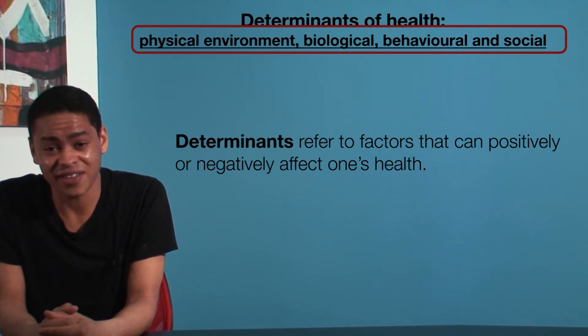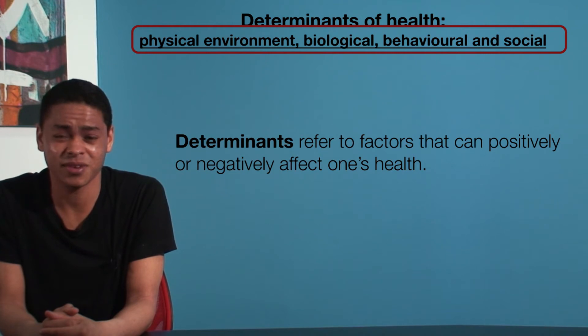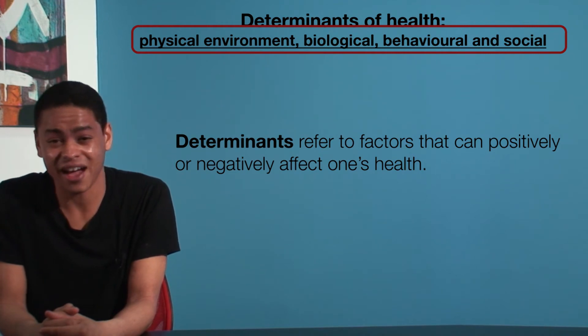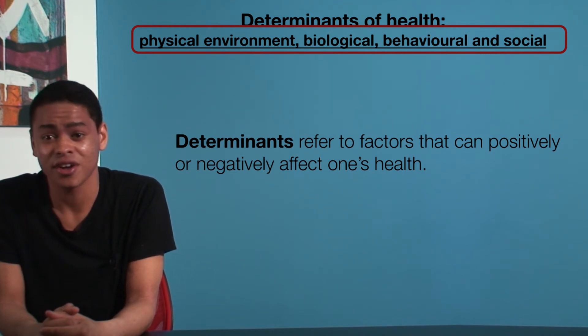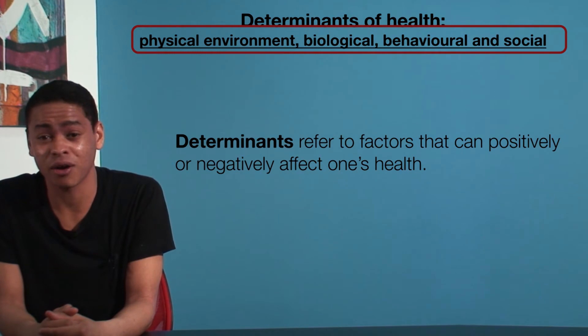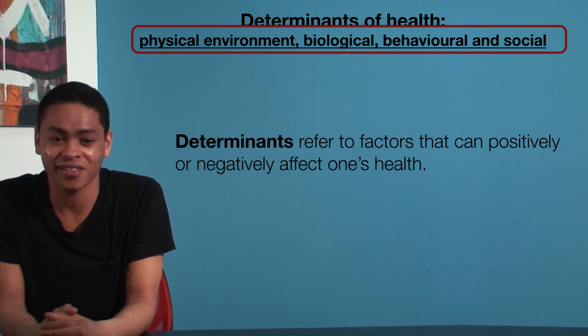You may need to define the determinant, provide examples of the determinant, explain how it's a risk or a protective factor for a disease or illness, or show how it will impact the health status of an individual or group. Let's take a look.